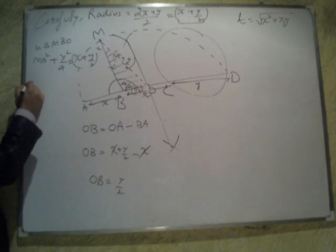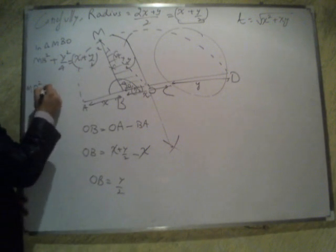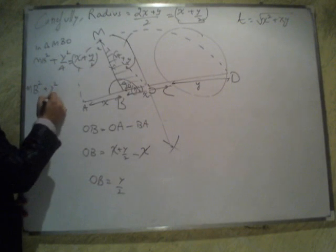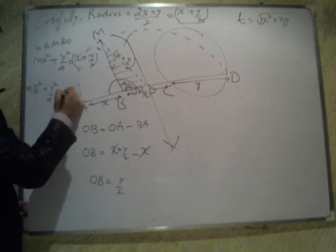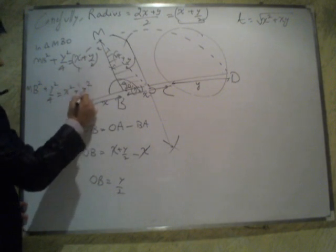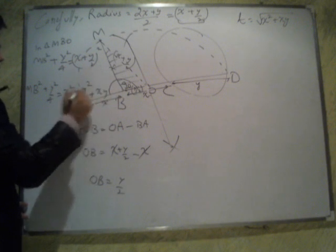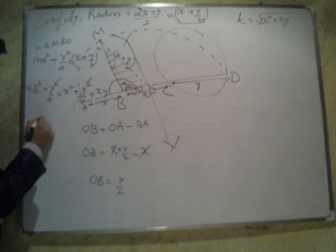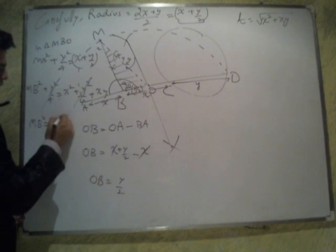Which gives me MB square plus Y square by 4 plus XY. This and this gets cancelled, I am landing up with MB square is equal to X square plus XY.